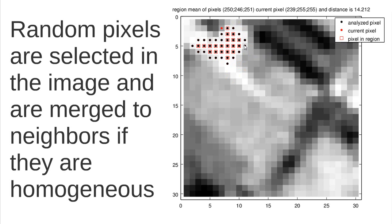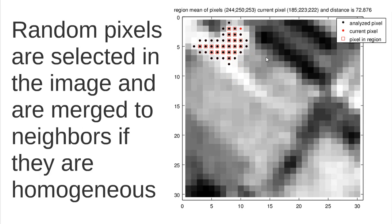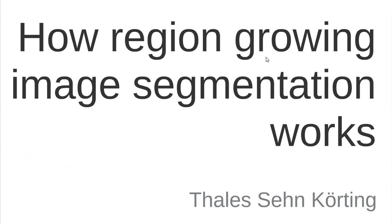It starts to walk through the image and to see their homogeneity considering its neighbors and merge or not the pixels. It's a very straightforward way. The segmentation goes along all the images and stops when no pixels without region are left. This is the way that region growing segmentation works.